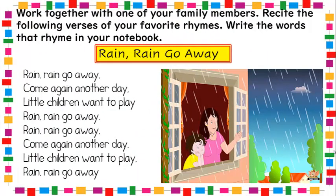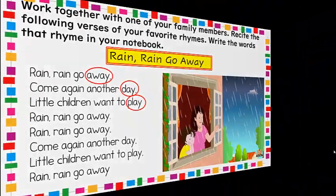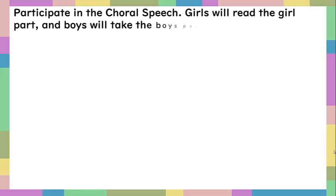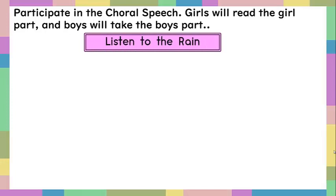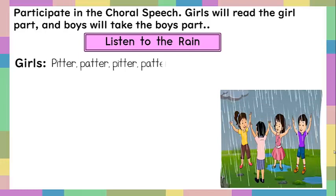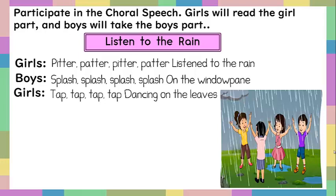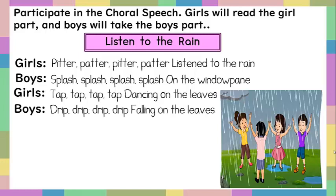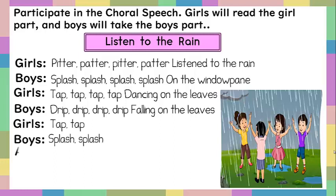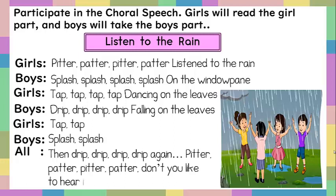Check your work — here are the words that rhyme in the verses we read. Now participate in the choral speech. Girls will read the girl part and boys will take the boys part. Listen to the Rain: Pitter, patter, pitter, patter, listen to the rain. Splash, splash, splash on the window pane. Tap, tap, tap, dancing on the leaves. Drip, drip, drip, falling on the leaves. Tap, tap. Splash, splash. Then drip, drip, drip again. Pitter, patter, pitter, patter — don't you like to hear it rain?